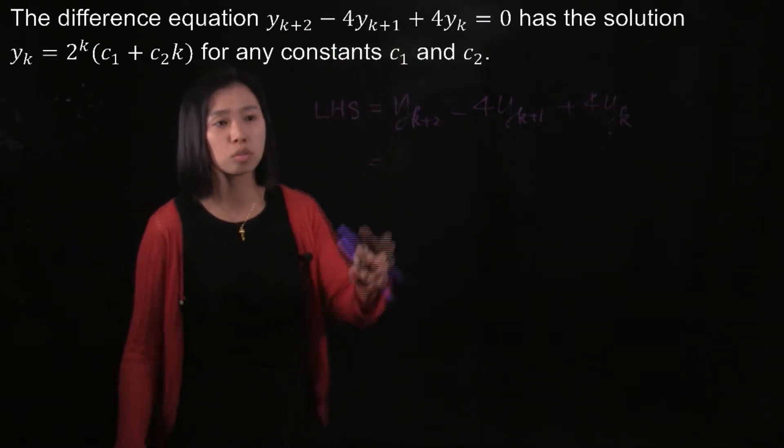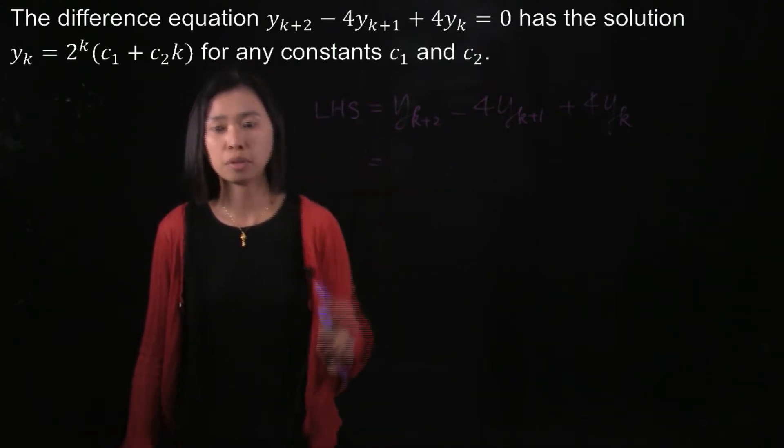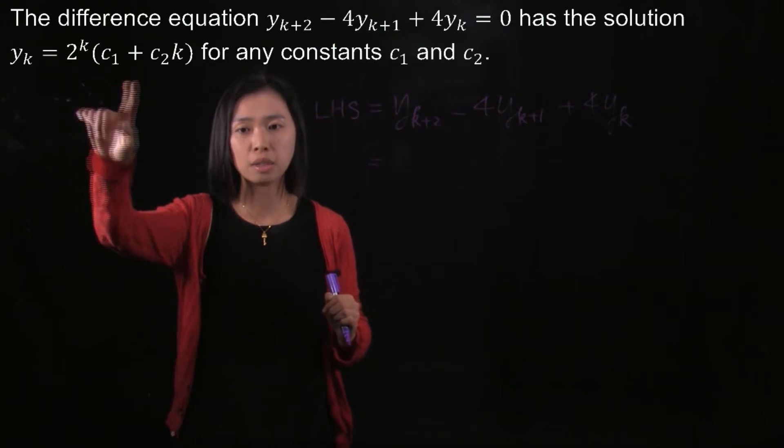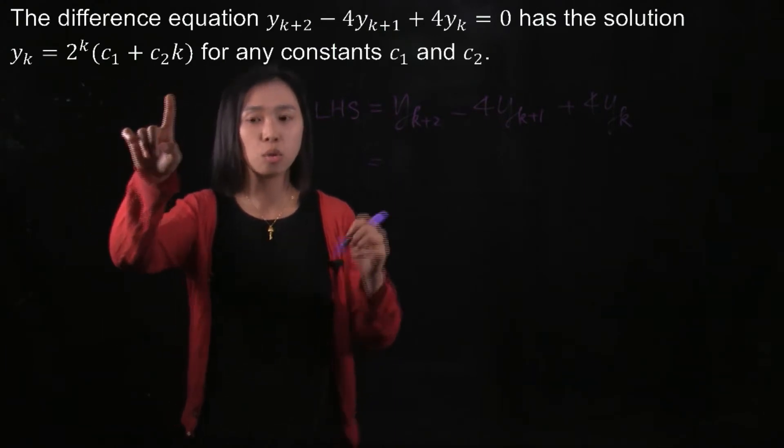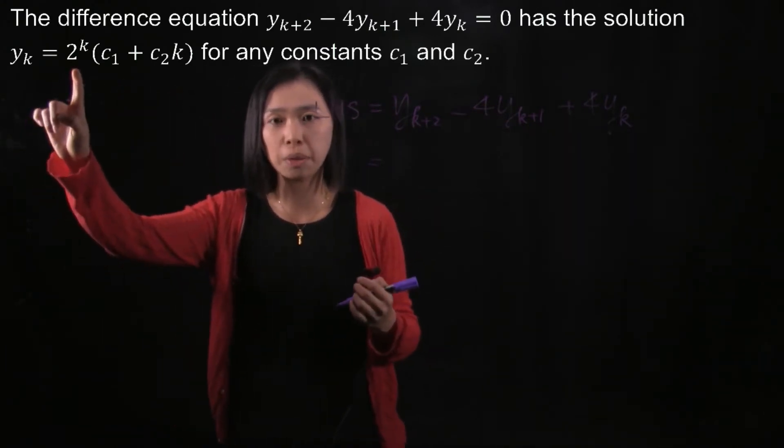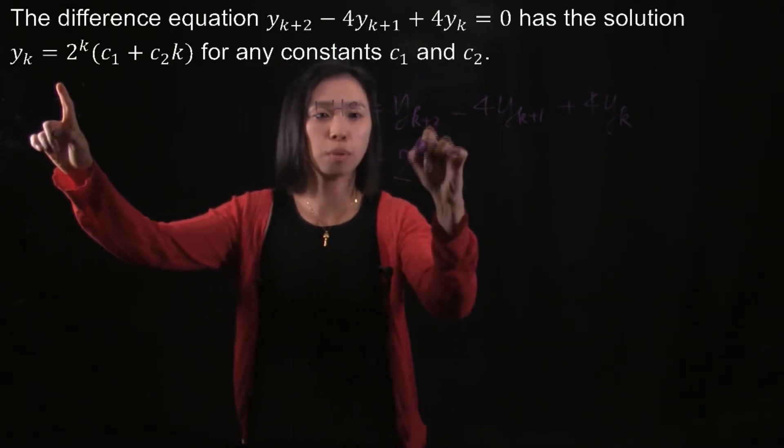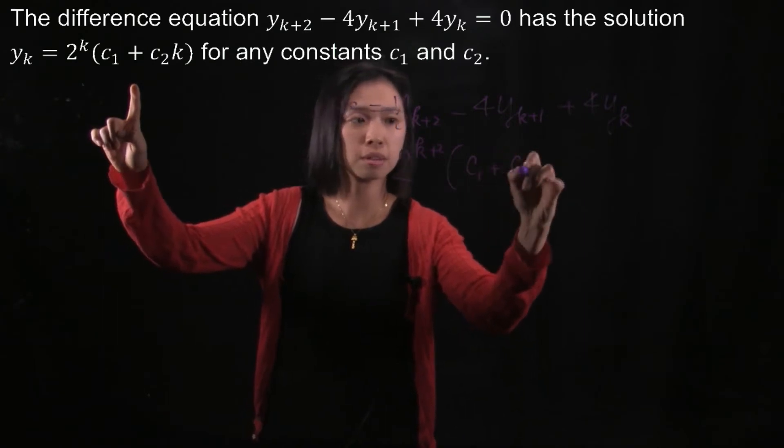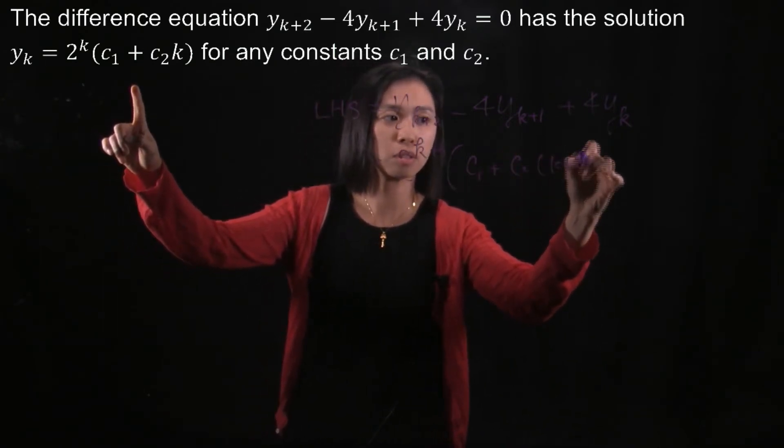We're going to work on this y_{k+2}. So take a look here. y_k is 2^k(c_1 + c_2k). So y_{k+2}, meaning that you replace all the k by k+2, we will have 2^{k+2} times (c_1 + c_2(k+2)).